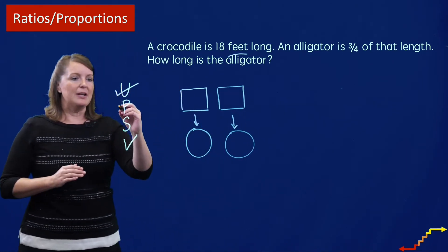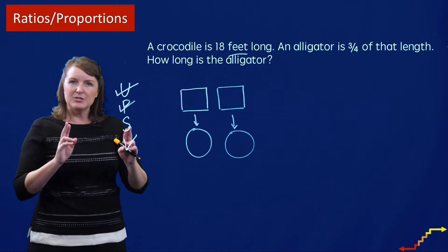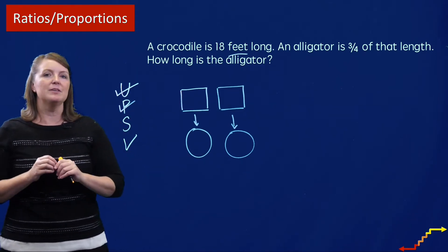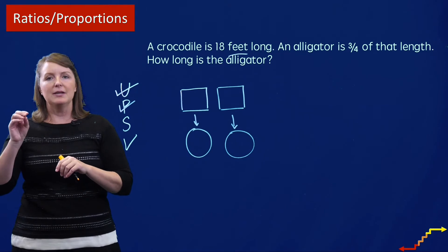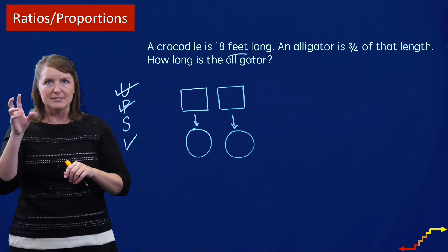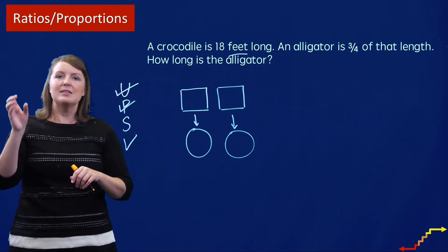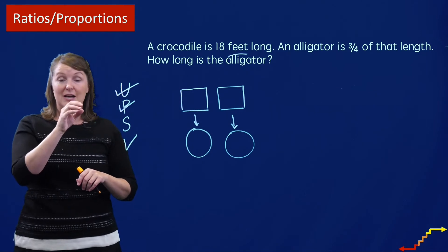Now, I've got my plan as a ratios and proportions problem. I do want to make a note that some people may solve this as a comparison problem. Thinking about that we have a set, we have the crocodile, and then the alligator is only 3/4 times that set.